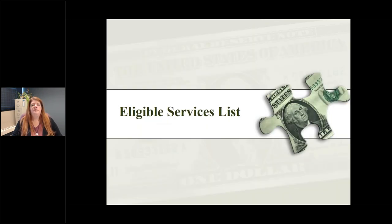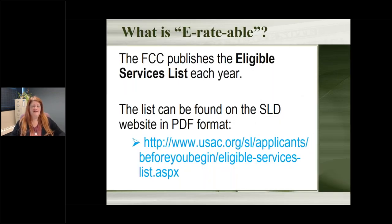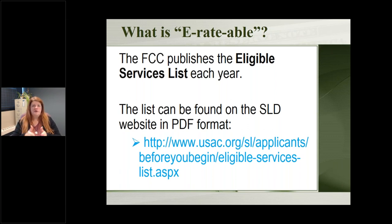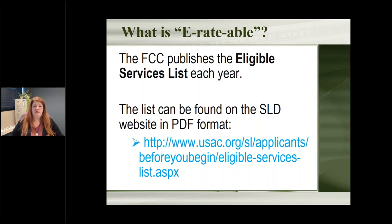So what is eligible — what is E-rateable? The FCC publishes what they call the eligible services list every year. Each year there's a new list of all the things you can get an E-rate discount on, so you need to make sure you're looking at the right list for the year you're applying for. There is a new list for 2019. This is important because sometimes you are working with multiple years at the same time — right now you're starting to apply for 2019 but still wrapping up the process for 2018.